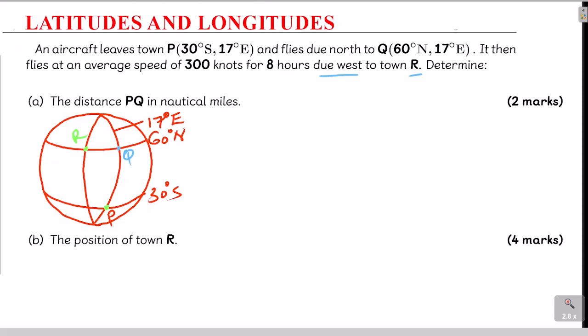Now we get the distance PQ in nautical miles. The first thing is to identify which type of distance this is. PQ is distance along the great circle, since it is distance along the meridian — the same longitude of 17 degrees east, but on different latitudes. The formula for distance in nautical miles is: theta times 60, where theta is the latitude difference.